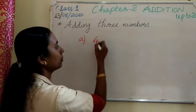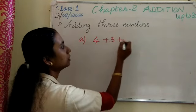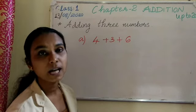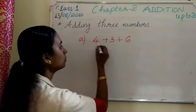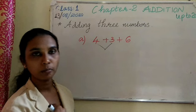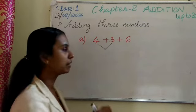A, 4 plus 3 plus 6. We first add the first two numbers. It is 4 plus 3. 4 in your mind, 3 finger. After 4, 5, 6, 7.